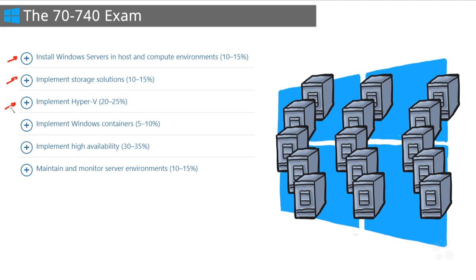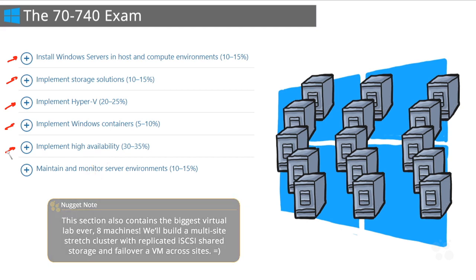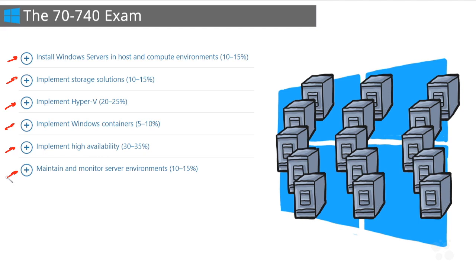Next is a huge section on Hyper-V and virtualization — installing and configuring Hyper-V, and configuring virtual machines, storage, and networking. There's also a section on containers, a brand new feature in Server 2016 — we'll break down what containers are, stand up a container host, and deploy and manage both Windows and Hyper-V containers. Our biggest section is implementing high availability, which is loaded with great content. It mainly covers failover clustering but also includes the new storage spaces direct feature and NLB network load balancing.